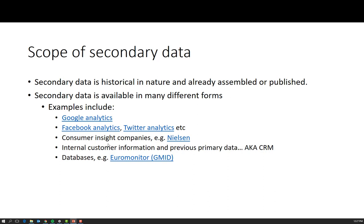Secondary data is available in many different forms. Some increasingly popular forms are forming part of what is known as big data — analytics provided by internet and social media companies. You can look at Google Analytics; there is a certificate you can do as a Google analyst that you can put on your resume, and it's a way of looking at internet data and driving internet traffic towards company websites. Similarly, Facebook Analytics, Twitter Analytics, and Instagram Analytics — all of these social media companies provide analytics which allow marketers to look at social media users' behaviors and the effectiveness of their marketing and social media strategies.